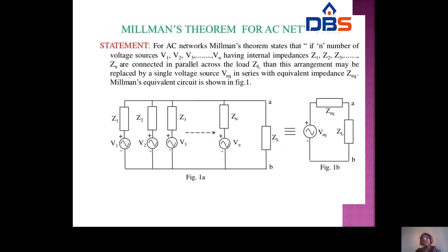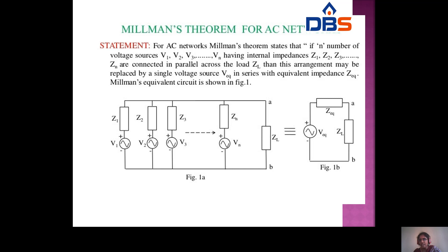Next is Millman's theorem. When there are N number of voltage sources V1, V2, V3, ..., VN each having internal impedances Z1, Z2, Z3, ..., ZN connected in parallel across a load ZL, this arrangement may be replaced by a single voltage source in series with an equivalent impedance — that is Millman's equivalent circuit.